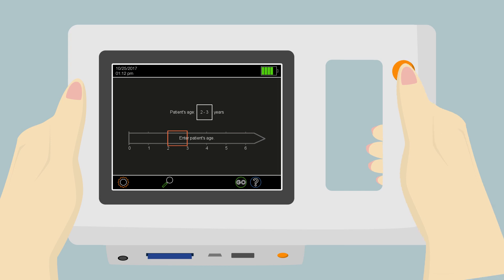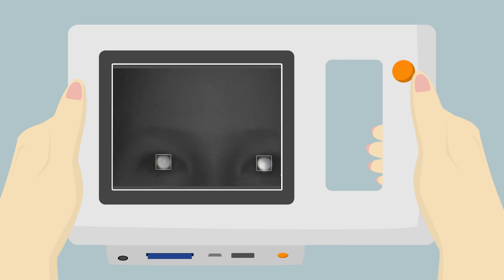Press and release the shutter button. An attention-grabbing warble sound will emit from the speaker in the PlusOptics device. Watch the screen and move it slightly until you see both pupils centered on the screen.